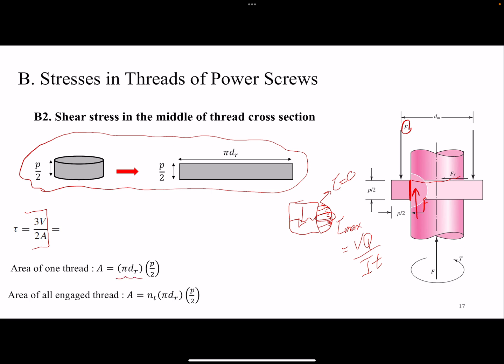And then we have the A. It's just the area of a rectangle. So, and then we just add NT for the number of threads involved, because not one thread carries all the load. After plugging the values, that's the equation that we get for the shear stress on the thread.